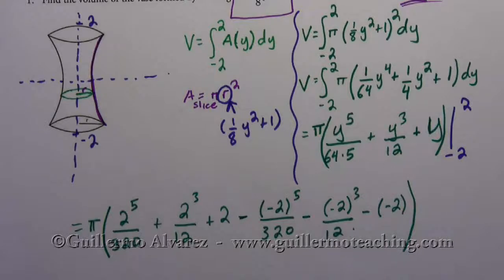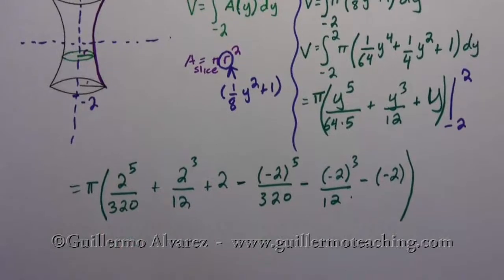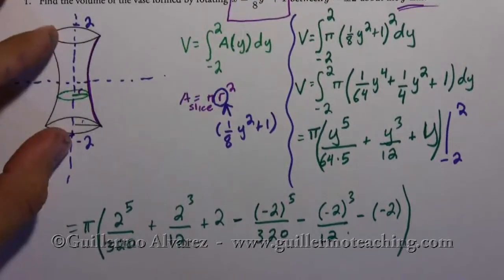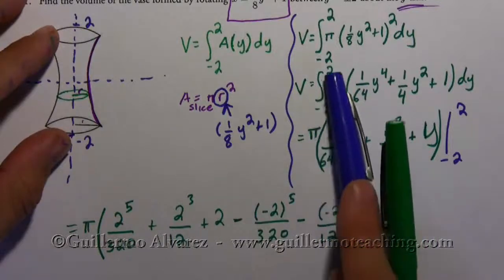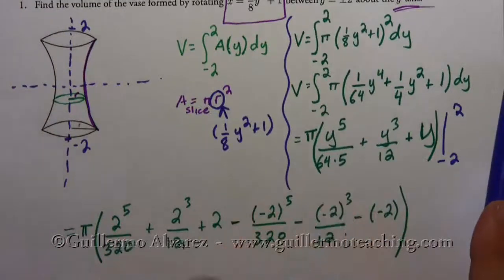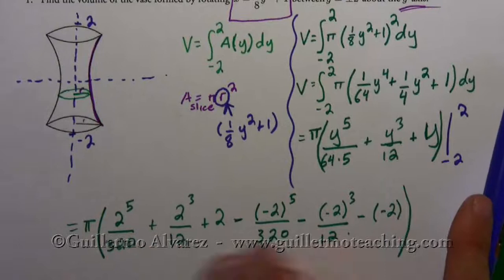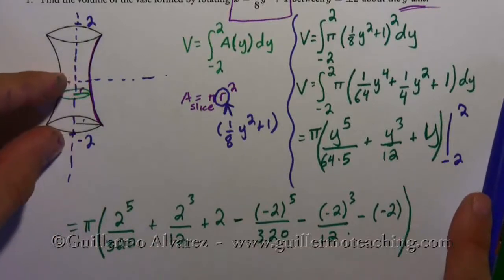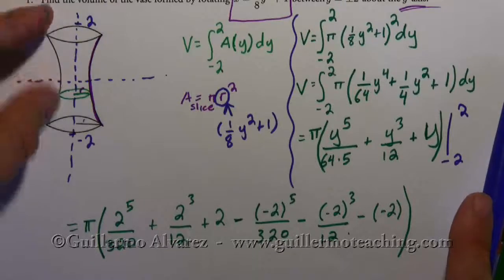And if you have a careful eye, you might have noticed that since it's symmetric, we could have just done the integral from zero to two multiplied by two. Because this chunk and this chunk are basically the same. Because this chunk below the x-axis and the chunk above the x-axis are the same as well.